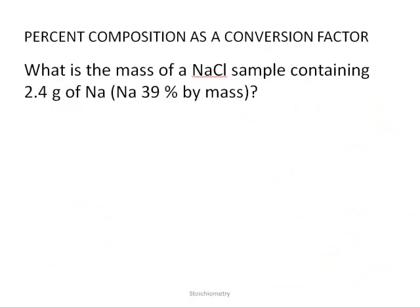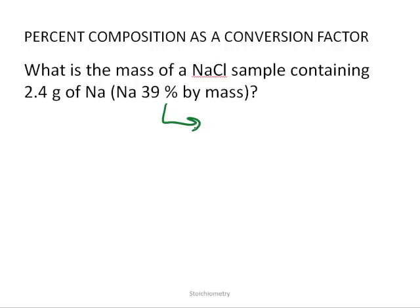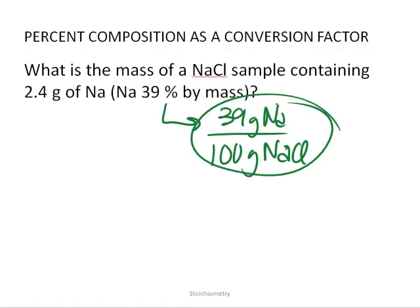Because percent by mass is mass of part over whole, we can easily use this as a conversion factor. If we know that sodium chloride is 39% by mass sodium, we can say that 39% means 39 grams of sodium per 100 grams of sodium chloride total. That means percentage can be used directly as a conversion factor.